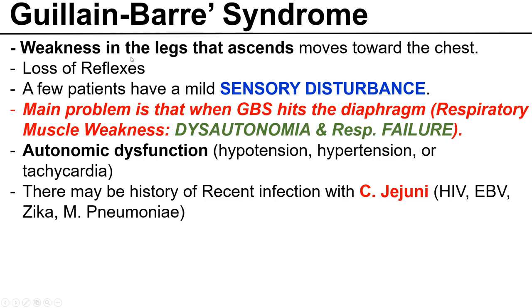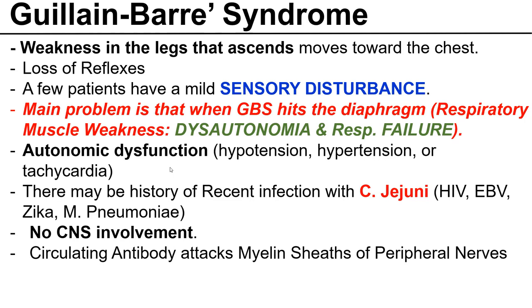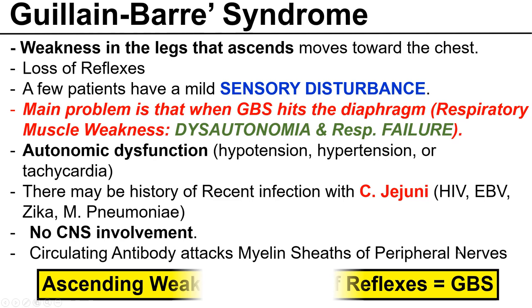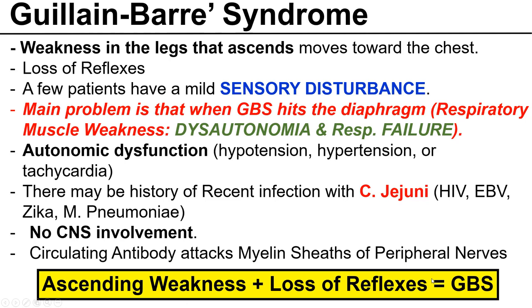The central nervous system is not involved — there are circulating antibodies which attack the myelin sheath of the peripheral nerves, so the CNS is spared. Remember this combination: ascending weakness and loss of reflexes equals Guillain-Barré syndrome.